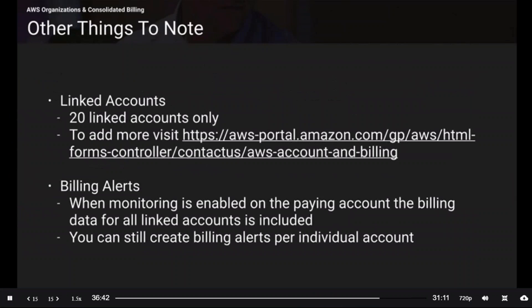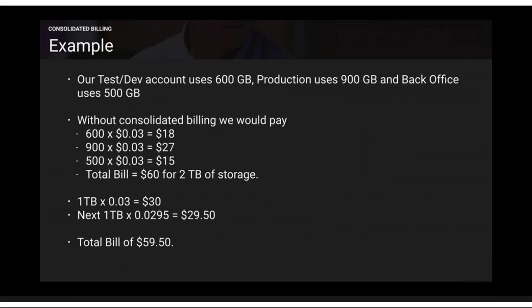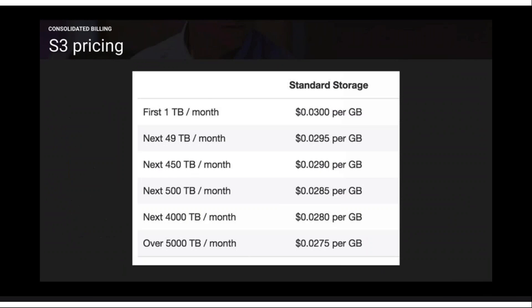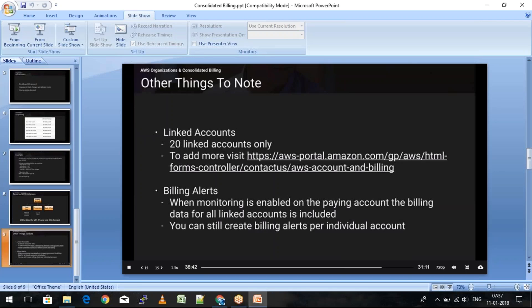Key things to remember: you can have up to 20 linked accounts, but you can increase this by raising a support case with AWS. You can also set billing alerts to track your budgets — for example, receiving an email when your bill exceeds $100 in a month. The advantages of consolidated billing include viewing all bills in one place, making payment from one AWS account, and getting volume pricing discounts across multiple linked accounts.